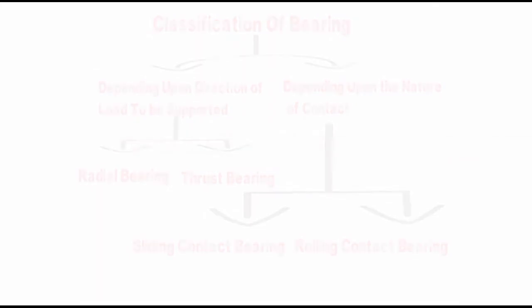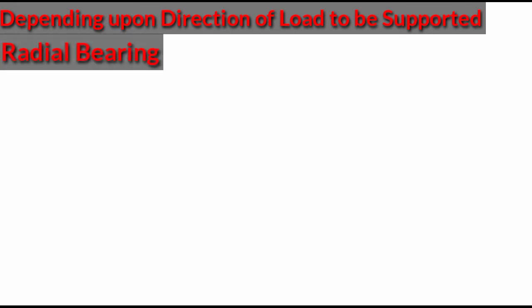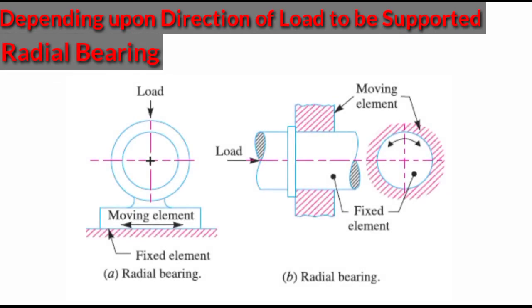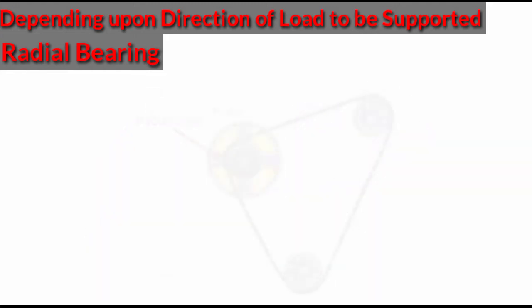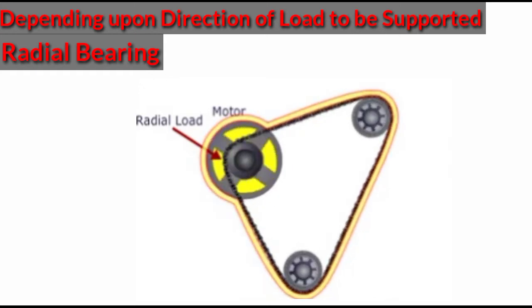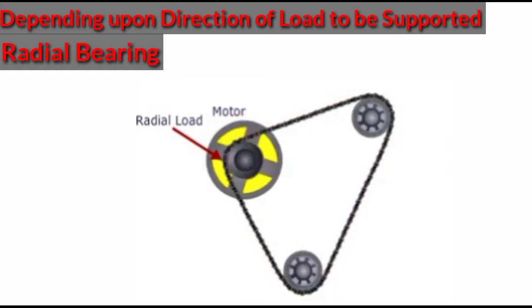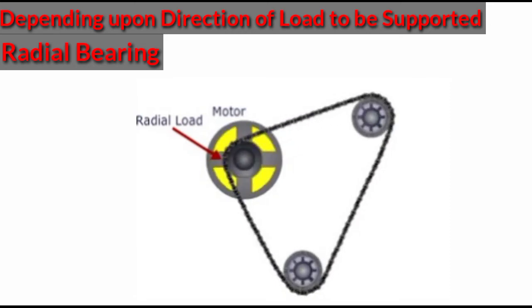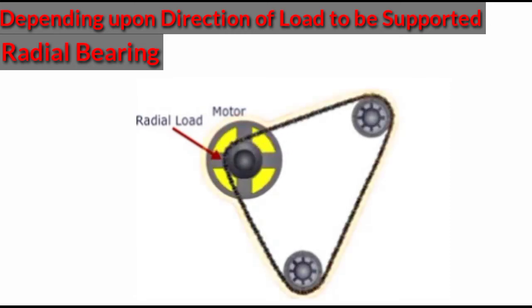Radial bearing: radial ball bearings are designed to withstand forces that are perpendicular to the direction of the moving element. As shown in the diagram, the bearing supports the shaft of a motor and pulley subjected to a radial load. Bearings used in the shaft of a motor and pulley only face radial load.